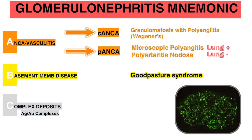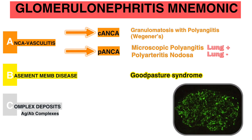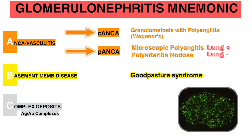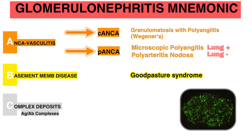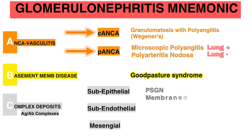Letter C for Complex Deposit Disease. Defined by immune complex or antigen-antibody deposits that appear granular on immunofluorescence. These can be further subcategorized based on where the complexes deposit in the glomerulus: subepithelial, subendothelial, or mesangial. Subepithelial deposits are seen in post-streptococcal glomerulonephritis and membranous glomerulonephritis. Subendothelial deposits are seen in membranoproliferative glomerulonephritis type 2, also known as dense deposit disease.